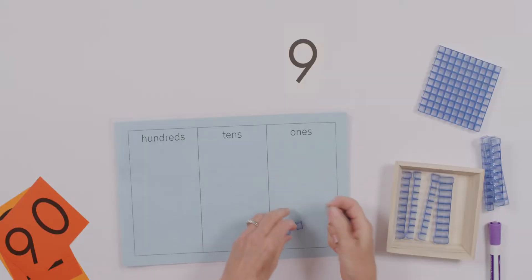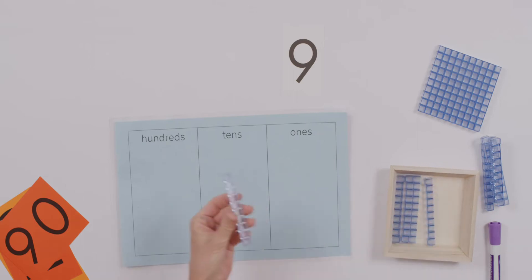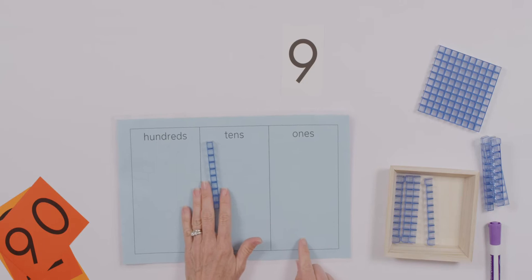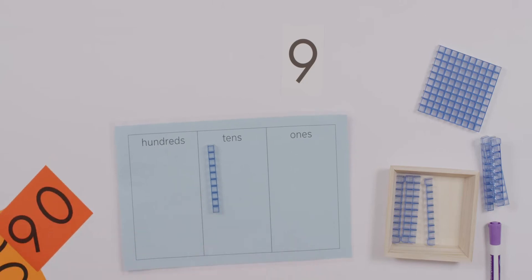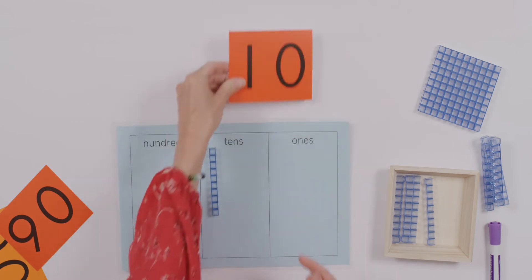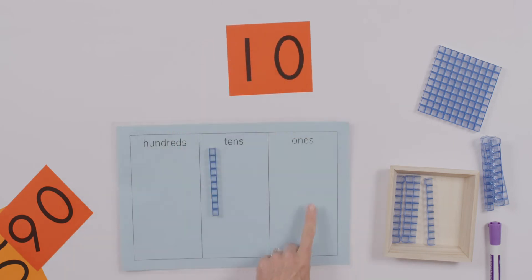So now that we have 10 units and the alarms are going off, what are we going to do? Oh, you're right, it's not such an emergency after all. All we have to do is exchange these 10 ones for 1 ten. Phew, that was pretty easy.